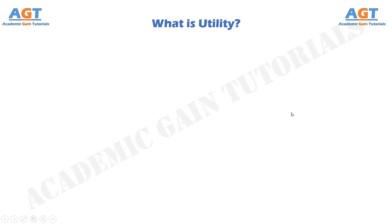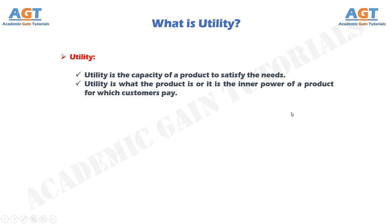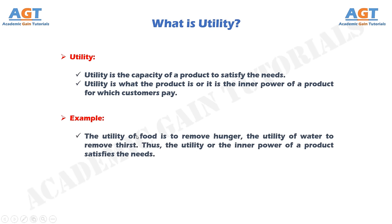Utility can be defined in many ways. Simply, utility is the capacity of a product to satisfy needs. Utility is what the product is — it is the inner power of a product for which customers pay. For example, the utility of food is to remove hunger, the utility of water is to remove thirst. Thus, the utility or inner power of a product satisfies the needs.